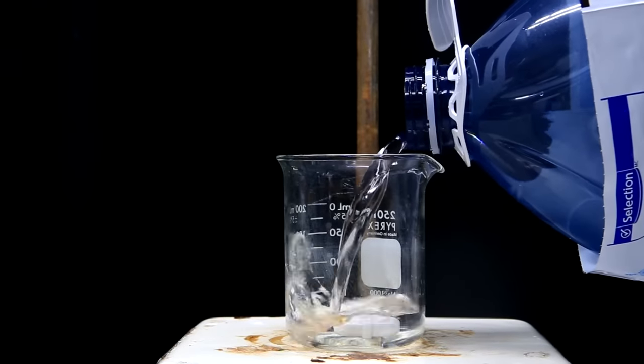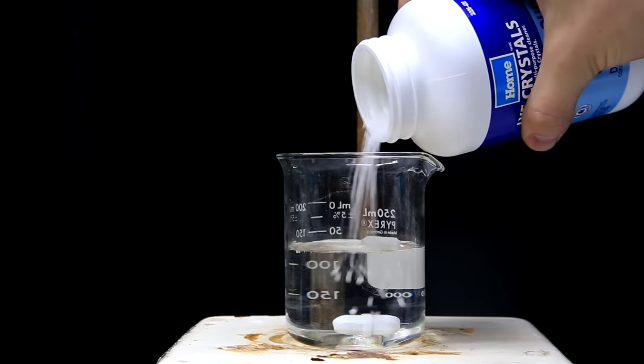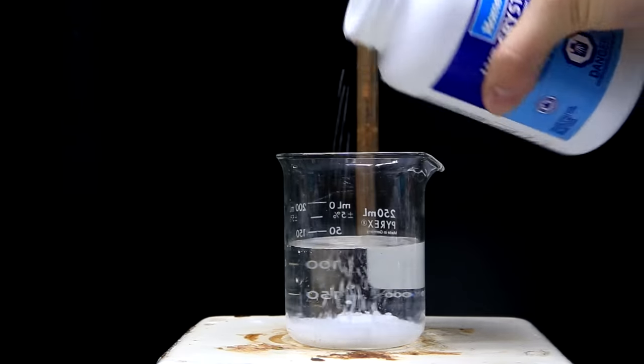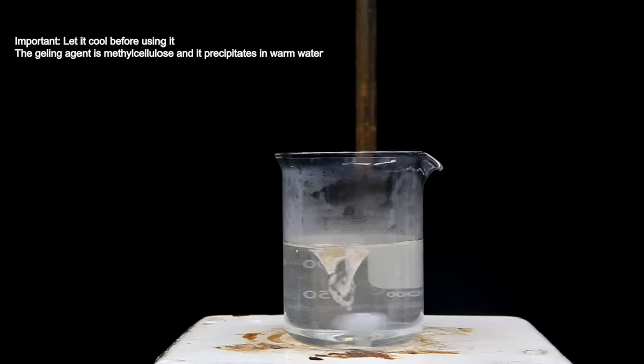To start out we fill a beaker with a little bit of distilled water, then add an arbitrary amount of sodium hydroxide to it. Using the magnetic stirrer, we stir until we get a nice clear solution. Dissolving sodium hydroxide releases quite a bit of heat so by the end the solution might be steaming a little.